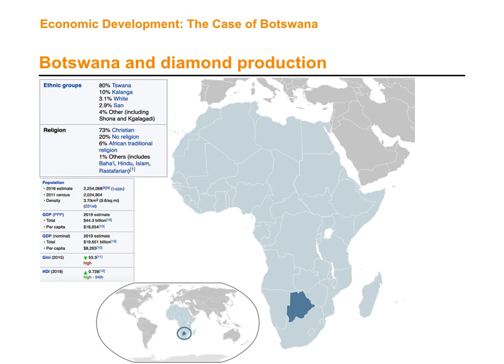The country is 80% Tswana in terms of ethnicities, so it is not very diverse compared to other countries like Nigeria or Ghana. It has around 8 ethnic groups and is mostly a Christian country. The population is relatively small — around 2.2 million people, based on 2018 estimates from Wikipedia.